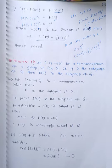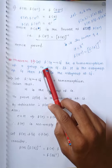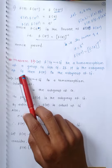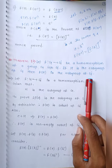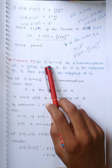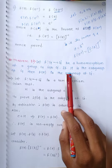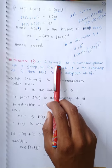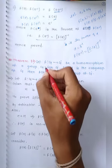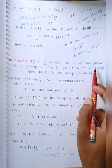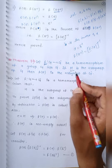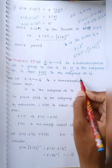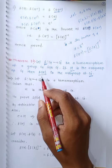Next theorem: Let F be a mapping from G to G' be a homomorphism of group G into G'. If H is a subgroup of G, then we have to show that F of H is also a subgroup of G'. The mapping F is a homomorphism of group G into G', and if H is a subgroup of G, then F of H is also a subgroup of G'.